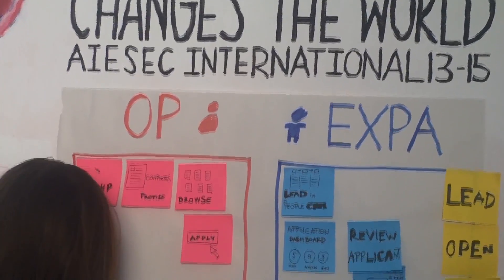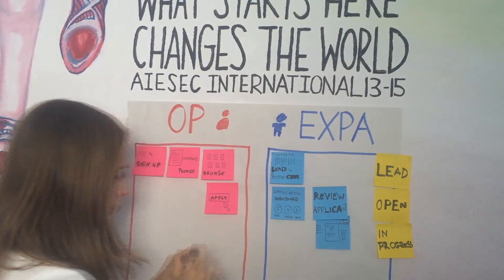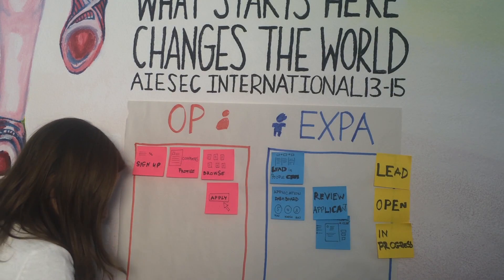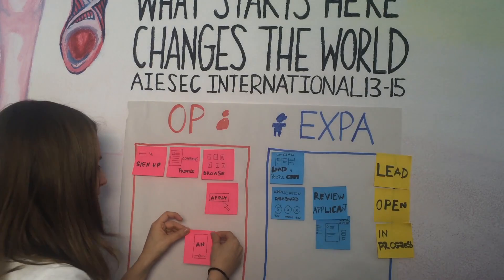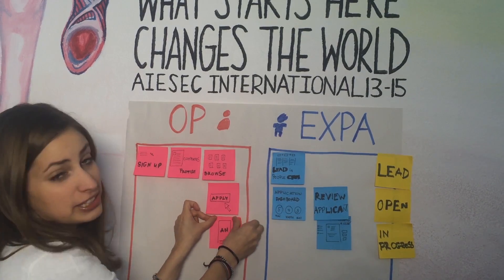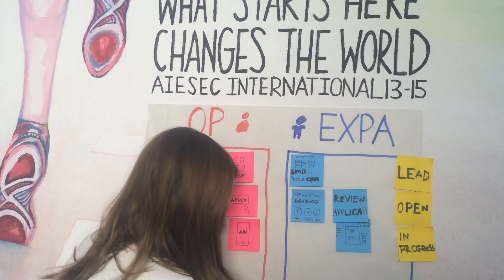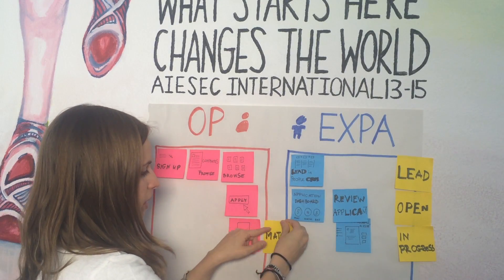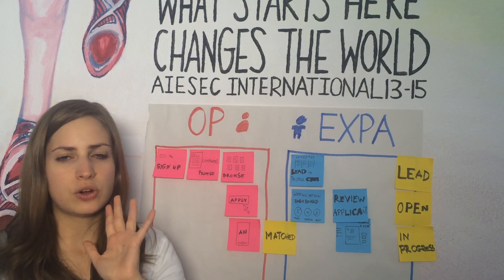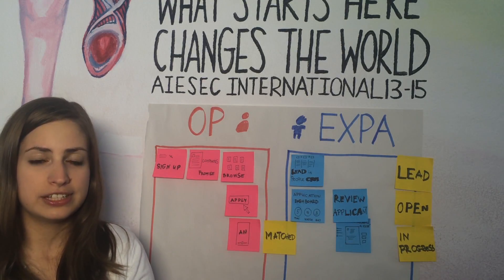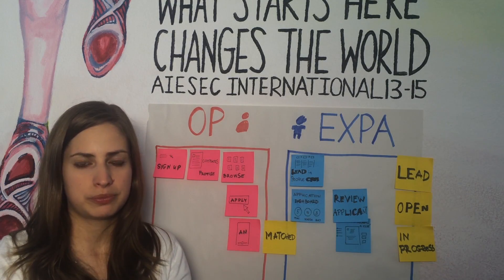Once they match someone, the EP will get a notification in the Opportunities Portal about an acceptance note which they will be able to sign. And once this happens they become matched. It's this easy — you can test almost all features of this already in the system, apart from the Opportunities Portal which will be out very soon.